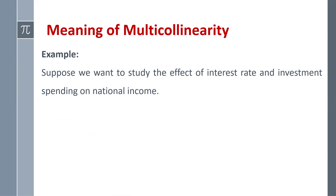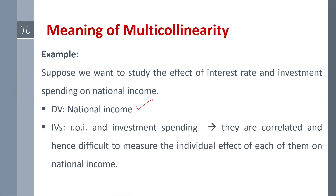Consider this example: suppose we want to study the effect of interest rate and investment spending on national income. The dependent variable is national income, and the two independent variables are rate of interest and investment spending. Since rate of interest and investment spending are correlated with each other, it is difficult to measure the individual effect of interest rate on income and the individual effect of investment spending on income — and therefore we have the problem of multi-collinearity.